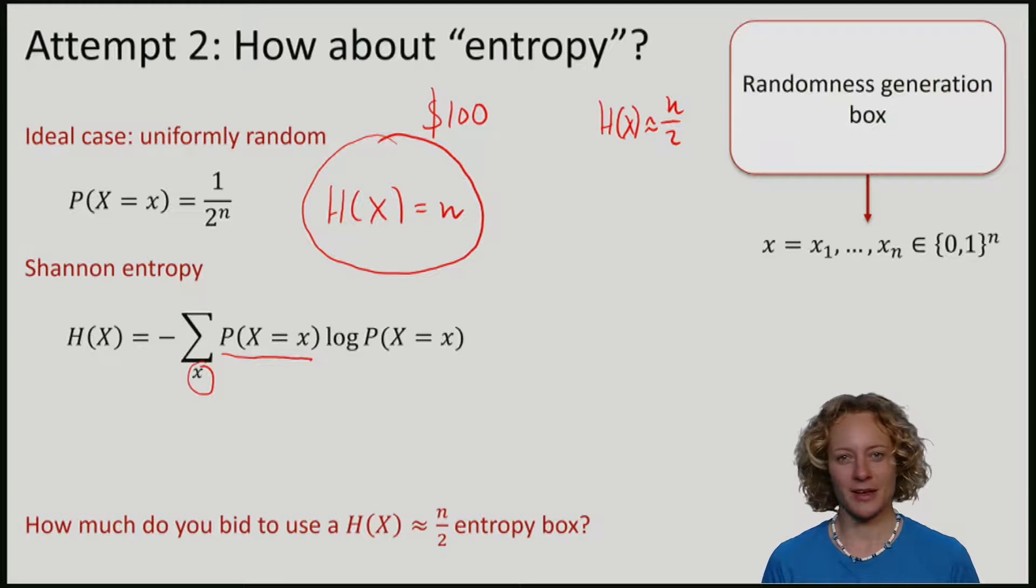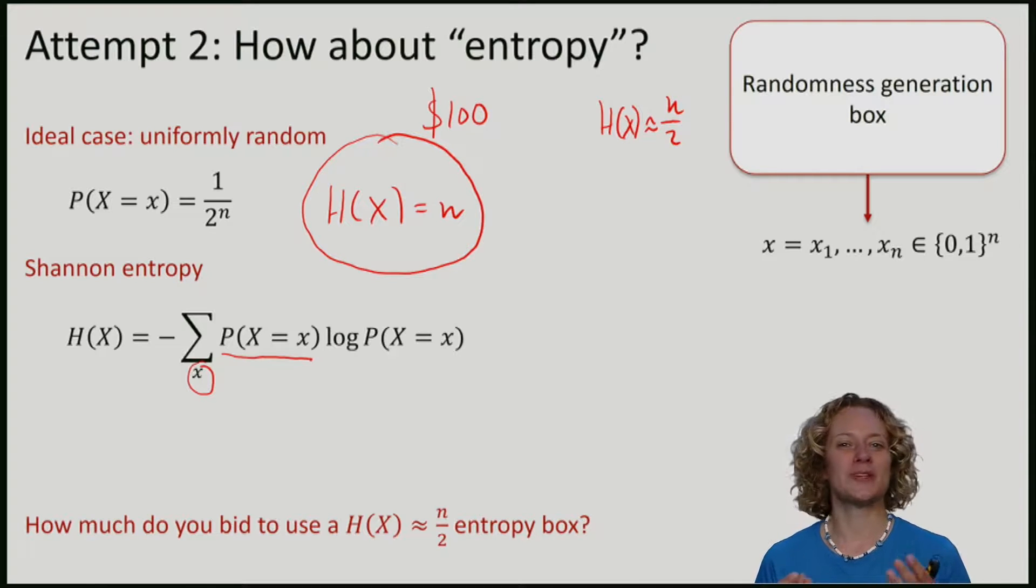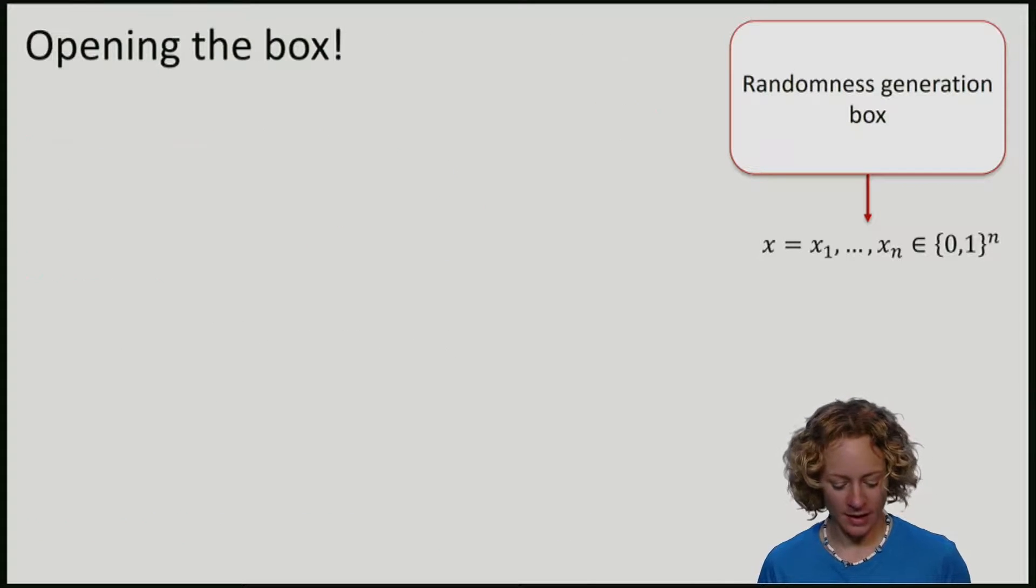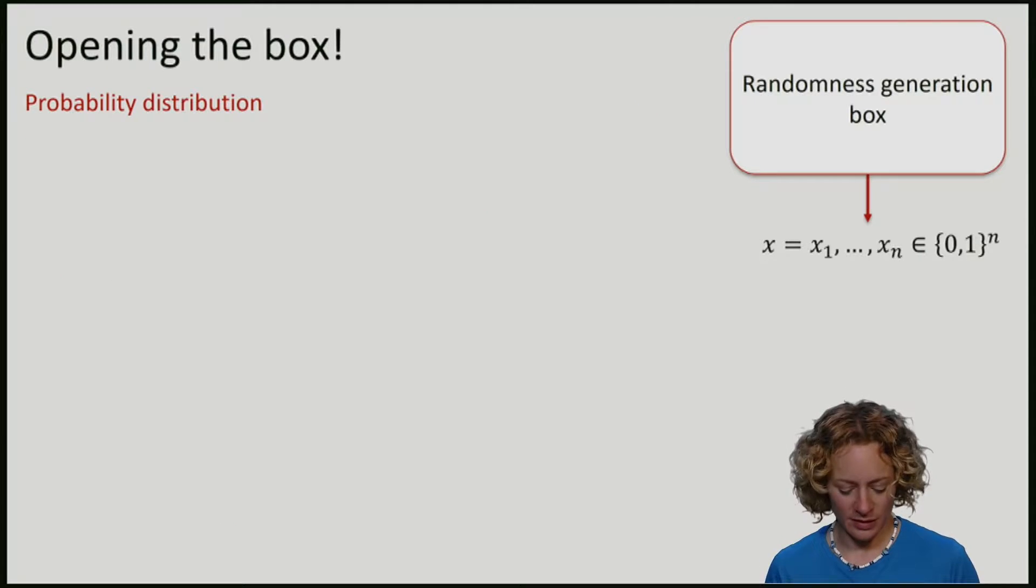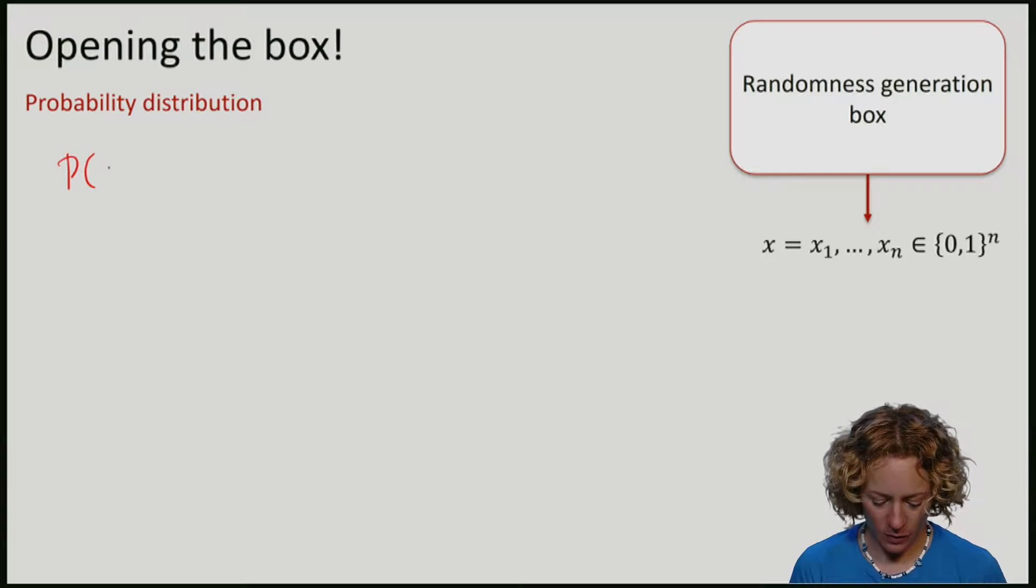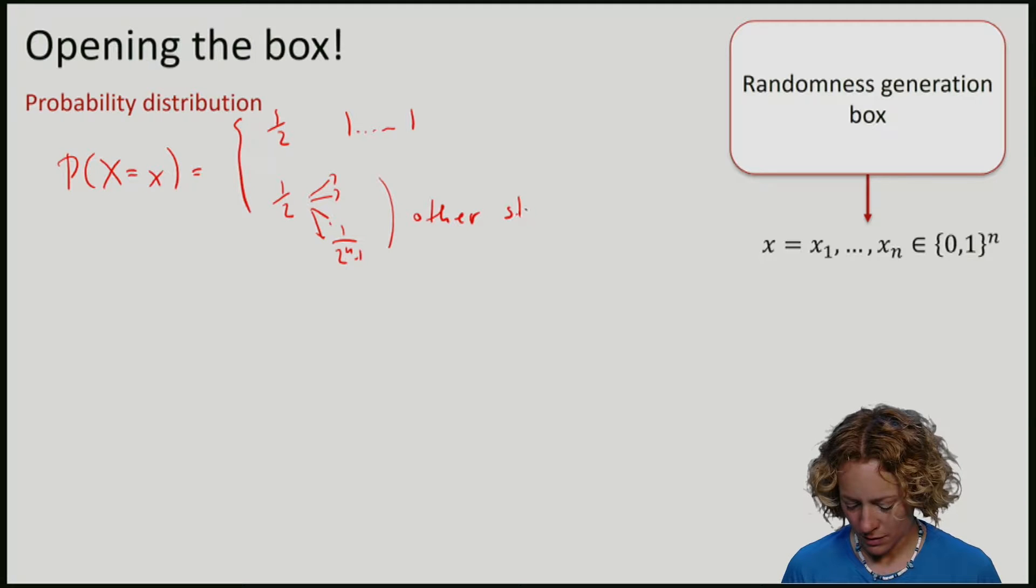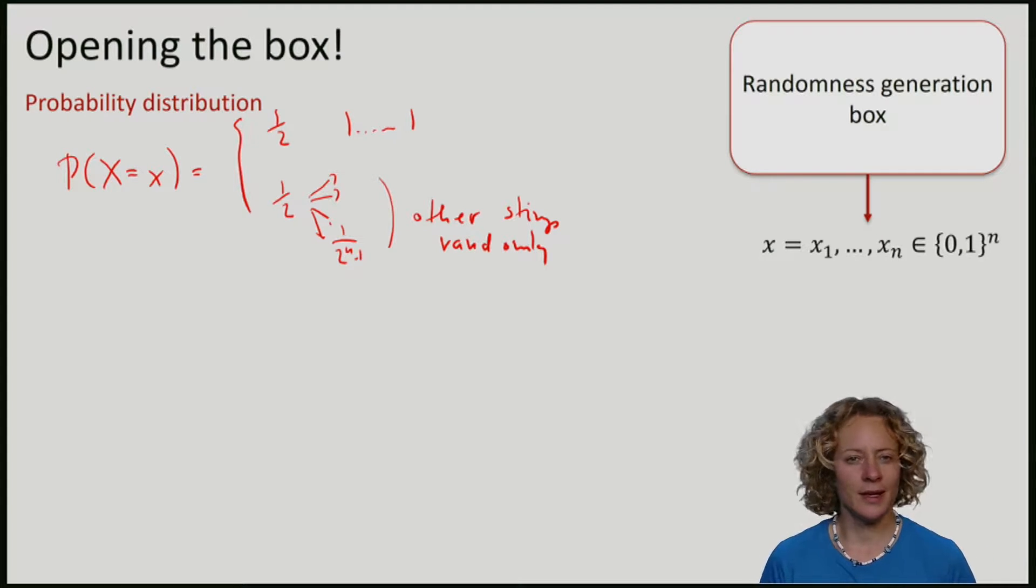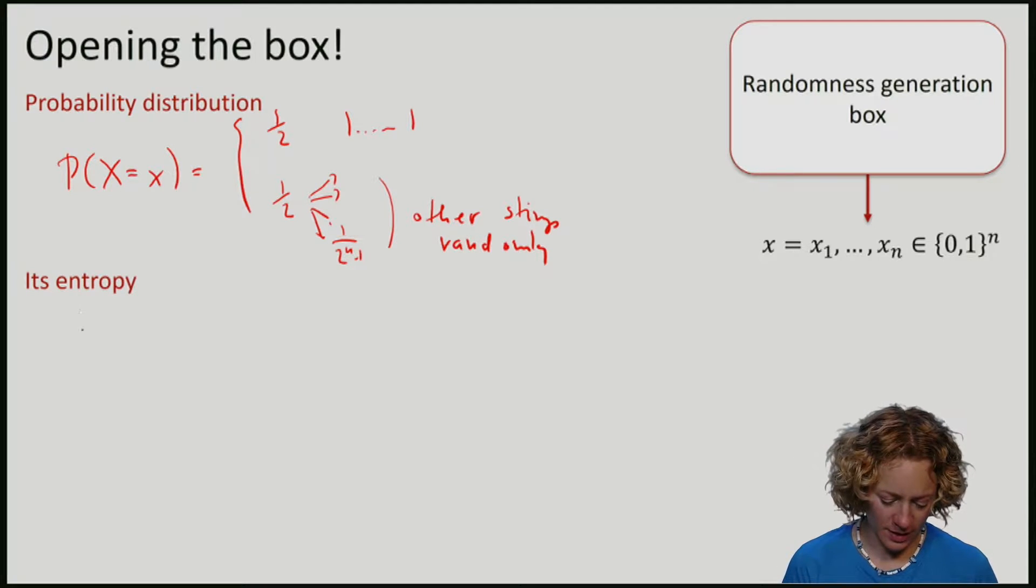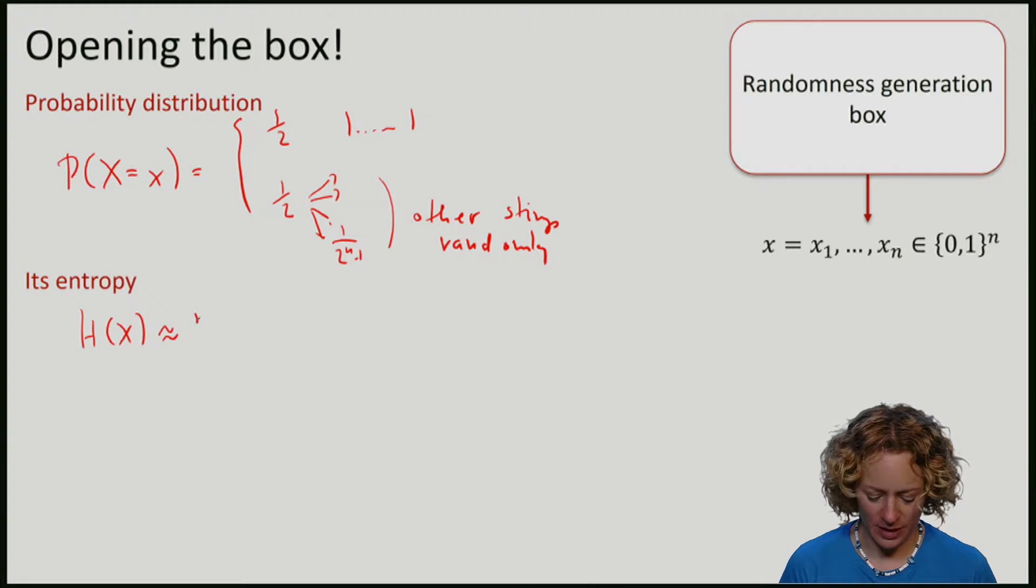In this video, I'm of course unfortunately not sure what your bid was. But let me open this box for you. I will tell you that the actual probability distribution that produced the string x looks as follows. With probability half, it will output the string and with probability half, it will output one of the other strings uniformly at random. If you compute the entropy of this distribution, and I encourage you to do this, we will find that the entropy is roughly n over 2.